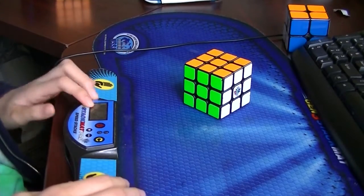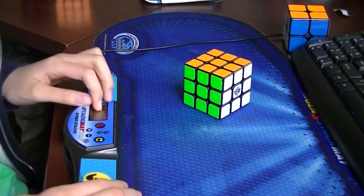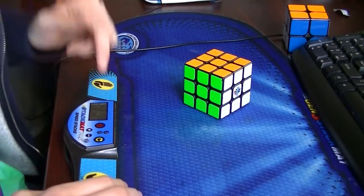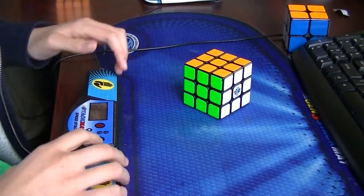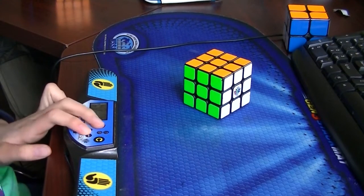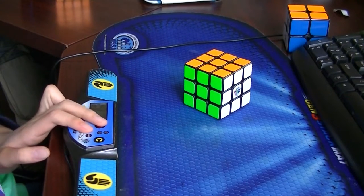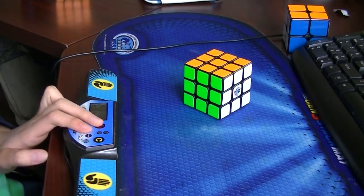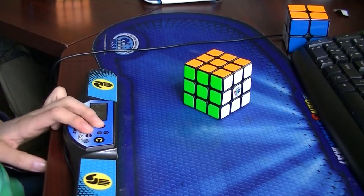The challenge is to get as close to 3 minutes 14.159 seconds as possible on a stack mat timer. Of course, if you have a Gen 2, you'd only be able to go up to 3 minutes 14.15 seconds. But you can also do this with a computer timer.